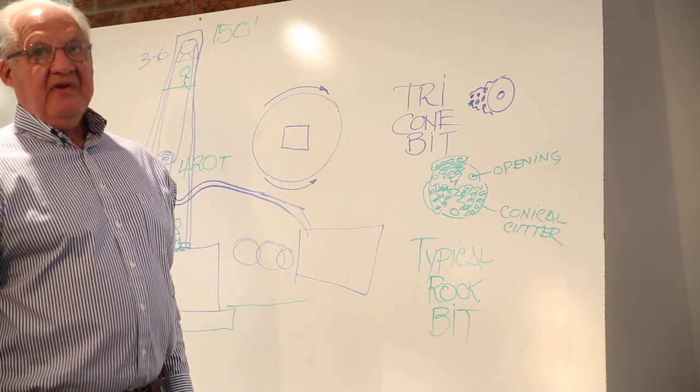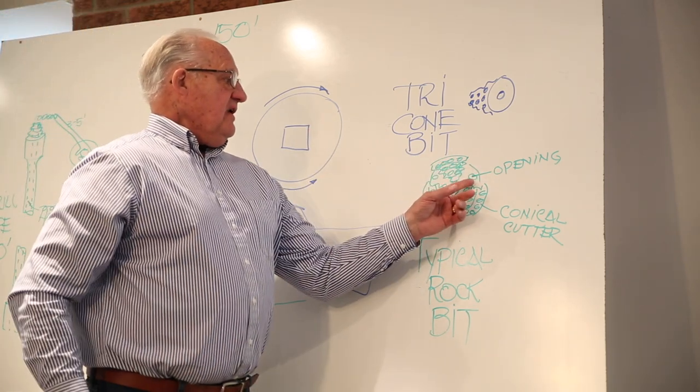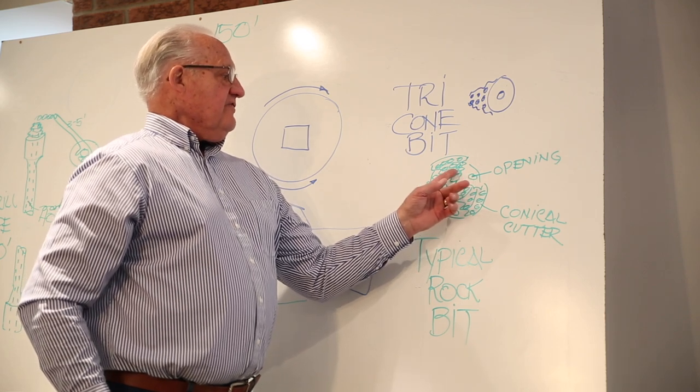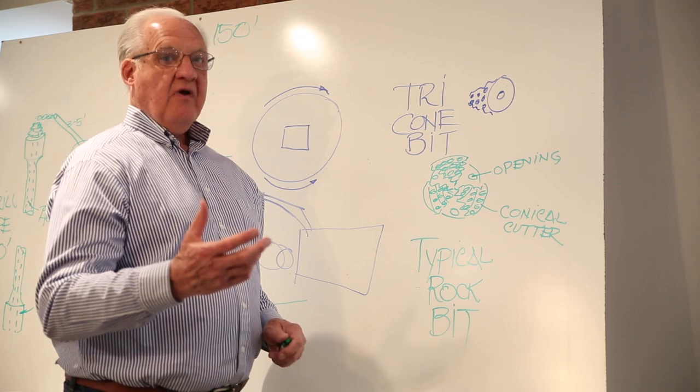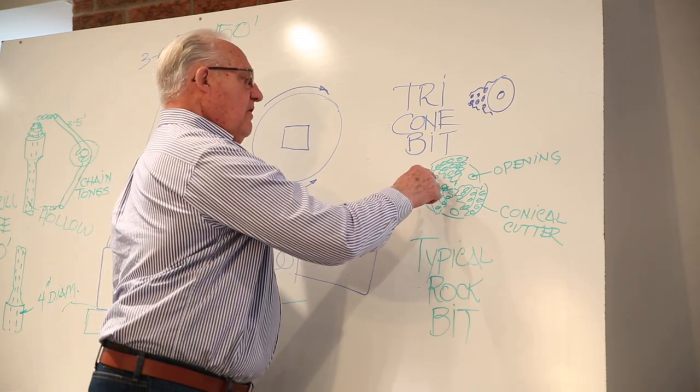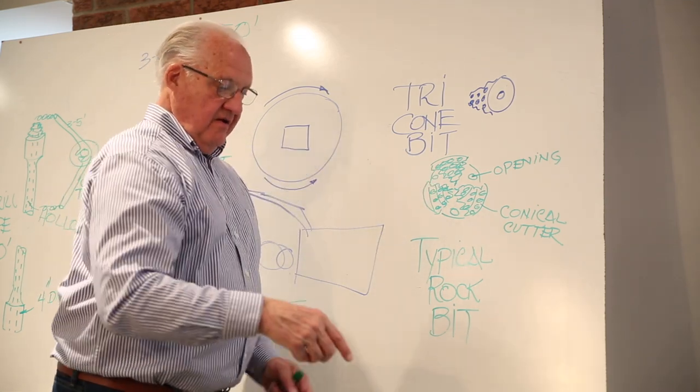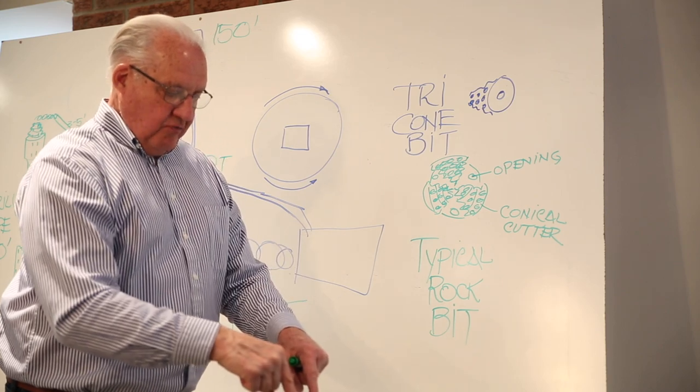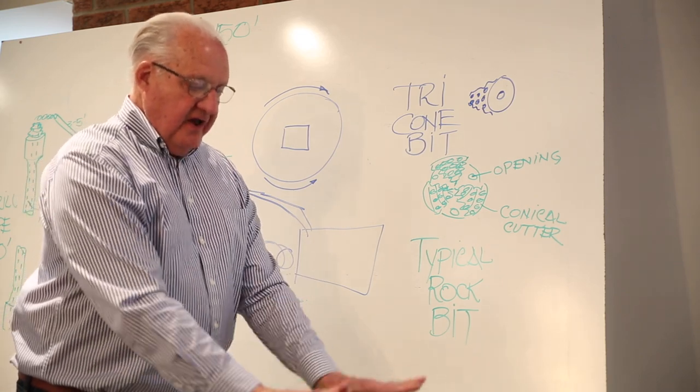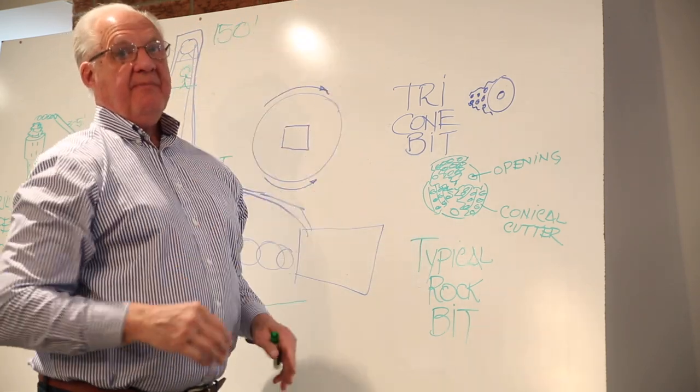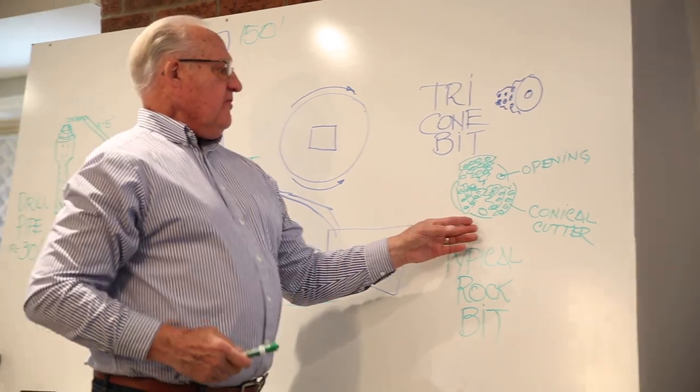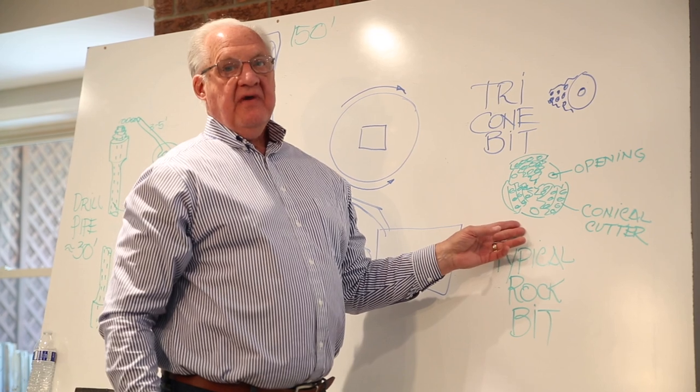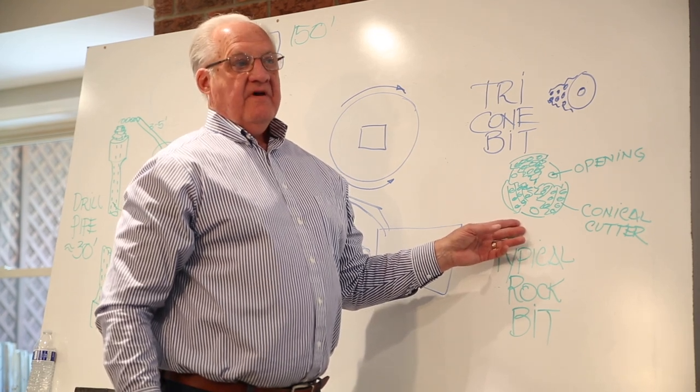So these are three conical cutters. Now there are three openings between the conical cutters, and this is where the mud gets pumped out. The mud can be directed against the cones, the cutting cones, to clean off any rock debris, or it can be directed straight down, blasting at the rock that they're going through and bringing the cuttings back up outside the pipe.